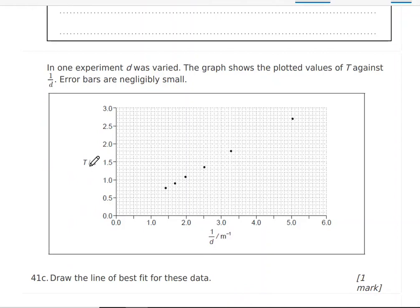Always when we write the value we write the unit next to it. Error bars are negligibly small. That's why they didn't draw it here on the graph. Draw the line of best fit. Now when we draw the line, a line should at least pass two points.